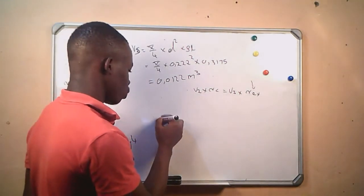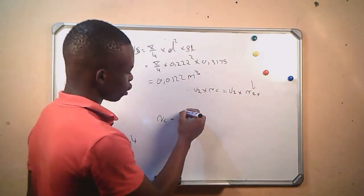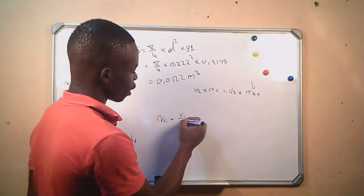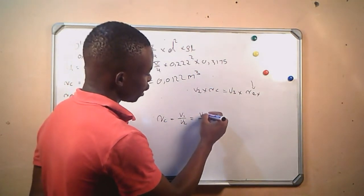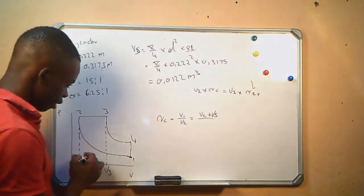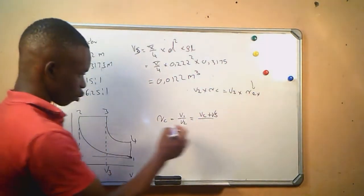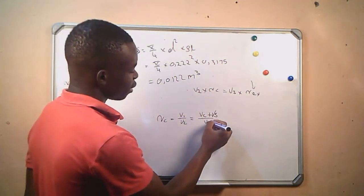From here, we use the compression ratio. We know it equals V1 divided by V2. V1 equals the clearance volume plus the swept volume, since it covers both. V2 only covers the clearance volume.